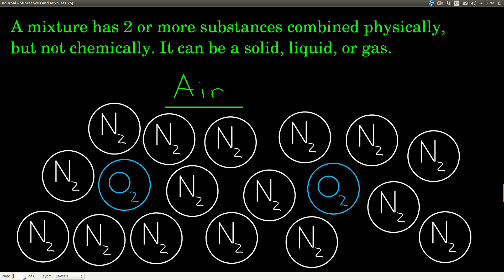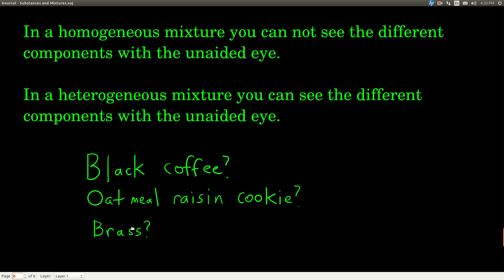This is what we call a homogeneous mixture. Homogeneous means that when you look at that mixture, you cannot see the different components with your unaided eye. If you have a good enough instrument, you can see them, but it's your unaided eye that's the distinguishing factor.